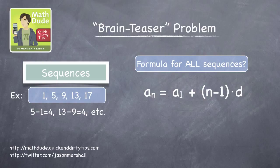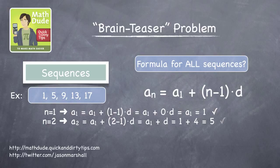For n equals 1, a sub 1 equals a sub 1 plus 1 minus 1 times d. Well, that's just a sub 1 equals 1, so it works here. For n equals 2, a sub 2 equals a sub 1 plus d. That's 1 plus 4 equals 5. It works again.